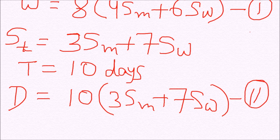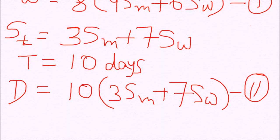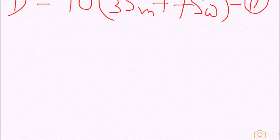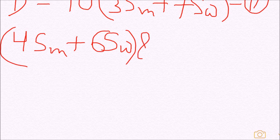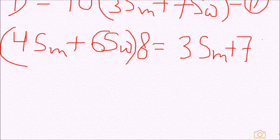Now as we know that the amount of work was same in both the cases, we can equate equation 1 and 2. We get 4 times SM plus 6SW into 8 is equal to 3 times SM plus 7SW into 10.